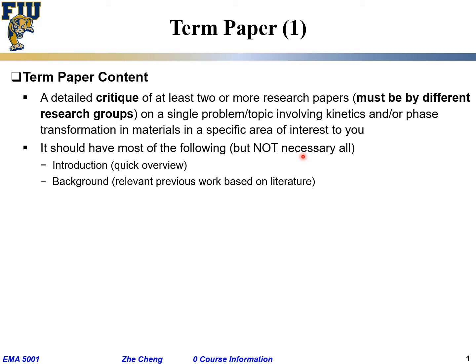Background is another way of saying previous relevant literature about this topic — very short. What has other people done before those two papers on this topic? Most likely you are not looking at the earliest paper. Those two papers may not be the first to look at that problem. So you tell other people what was known before or around the time of those two papers on this topic — background or literature.